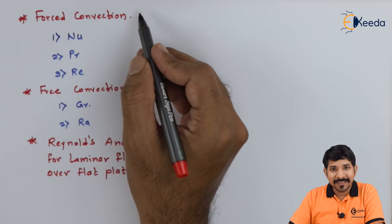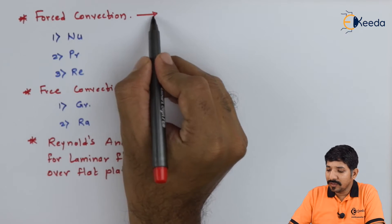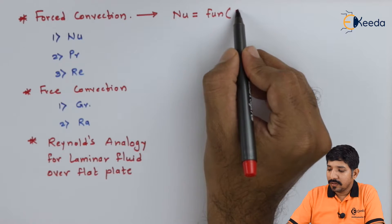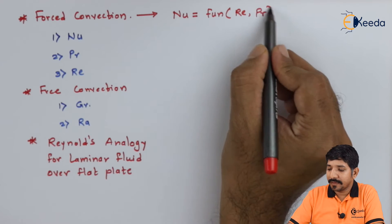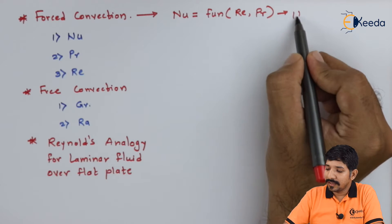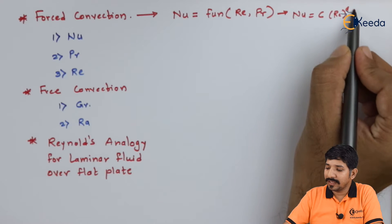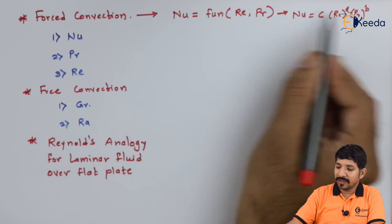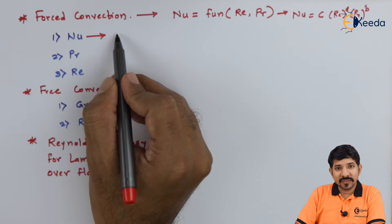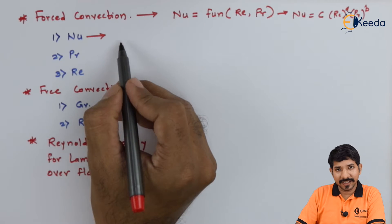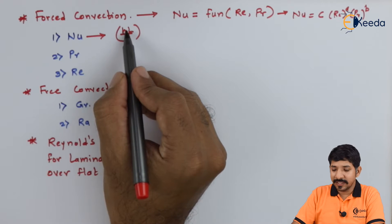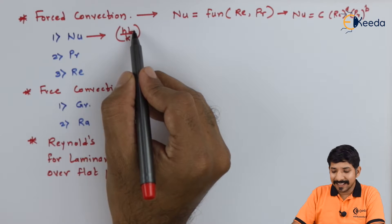We applied dimensionless analysis to forced convection and found that the Nusselt number is a function of Reynolds number and Prandtl number, written as Nu = C × Re^A × Pr^B. The Nusselt number is the ratio of thermal resistance offered by convection to that by conduction, given by the formula HL/K, where H is heat transfer coefficient, L is characteristic length, and K is thermal conductivity.